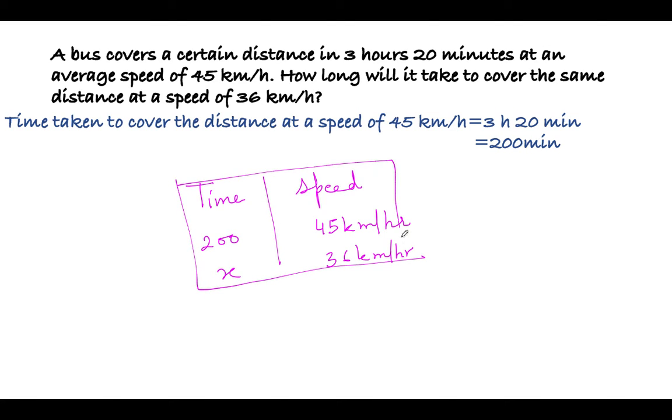Now as it is a case of inverse variation, ab will remain constant. So that means 200 × 45 will be equal to x × 36. So x will be equal to 200 × 45 ÷ 36, and then you can cancel it out by 9. 9 × 4 are 36, and 9 × 5 are 45.